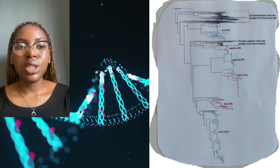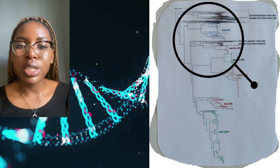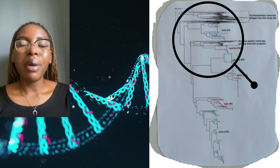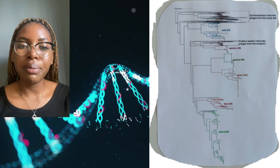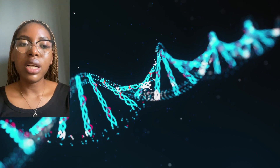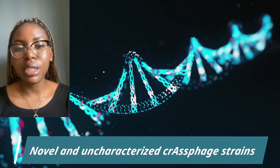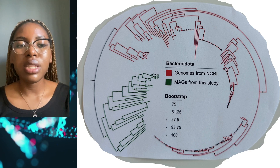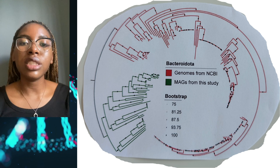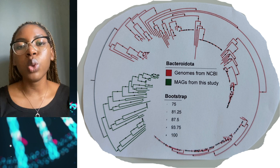Reconstruction of phylogeny showed that the majority of our crAssphage clustered separately from previously proposed subfamilies. However, some of our samples also clustered with known delta and epsilon subfamilies. These results suggest that rivers potentially harbor distinct and uncharacterized clades of crAssphage. These novel clades were also linked to new host phylogeny, which is in line with previous studies demonstrating that crAssphage are not exclusively associated with bacteria from the Bacteroidetes phylum.